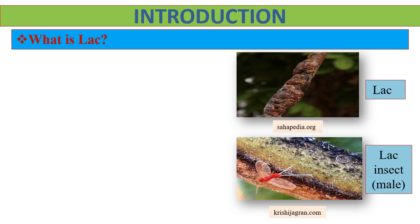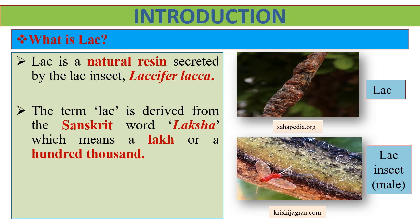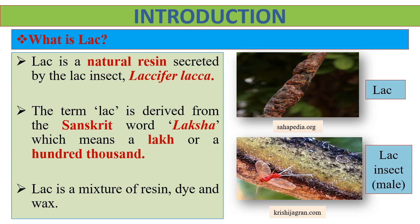First, what is lac? Lac is a natural resin secreted by the lac insect, Lassifer leca. Resin is a solid or viscous substance of plant or animal origin which is readily convertible into polymer. The term lac is derived from the Sanskrit word laksha, which means a lac or a hundred thousand, and here it refers to the large number of lac insects which secrete lac. Lac produced is a mixture of resin, dye and wax.